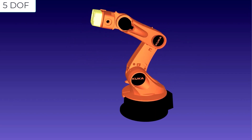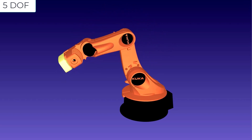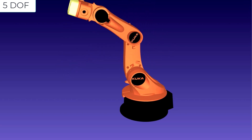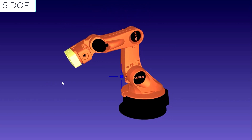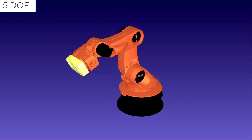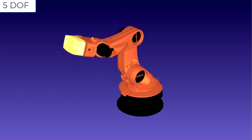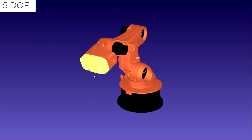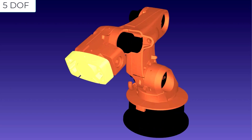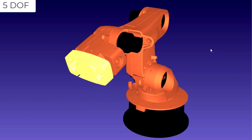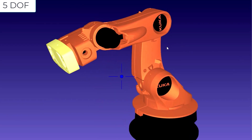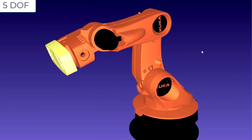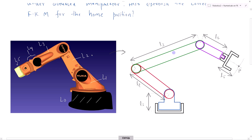The second joint is a revolute joint, the third joint is a revolute joint, the fourth joint is a revolute joint. This is the fourth revolute joint, and this is the geometric representation.